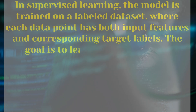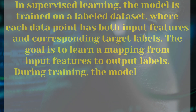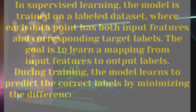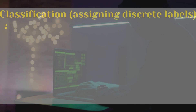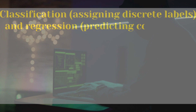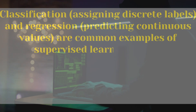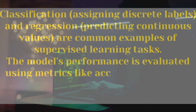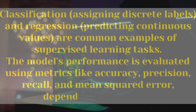The goal is to learn a mapping from input features to output labels. During training, the model learns to predict the correct labels by minimizing the difference between its predictions and the true labels. Classification, assigning discrete labels, and regression, predicting continuous values, are common examples of supervised learning tasks. The model's performance is evaluated using metrics like accuracy, precision, recall, and mean squared error, depending on the task.